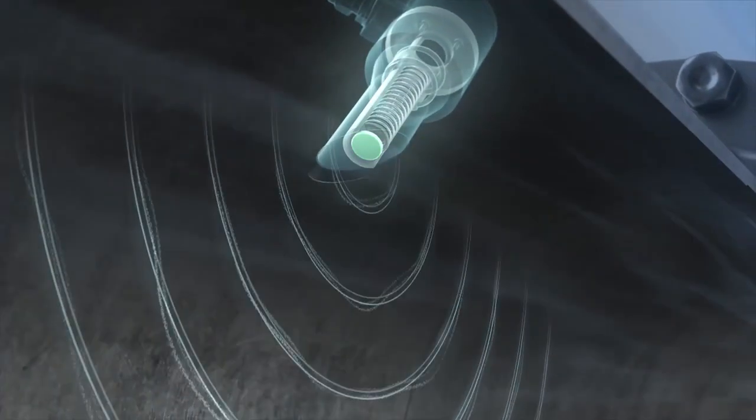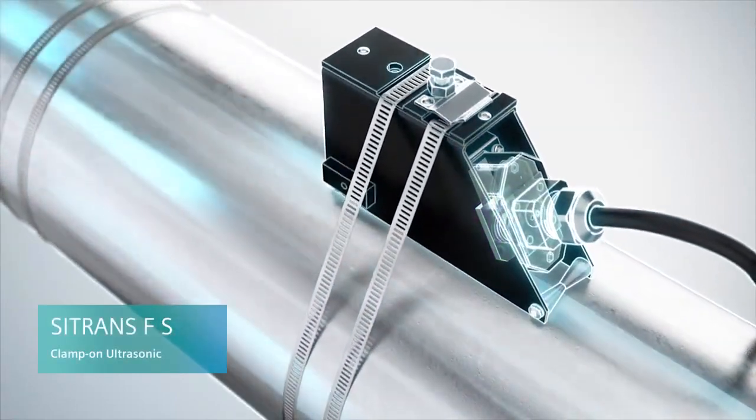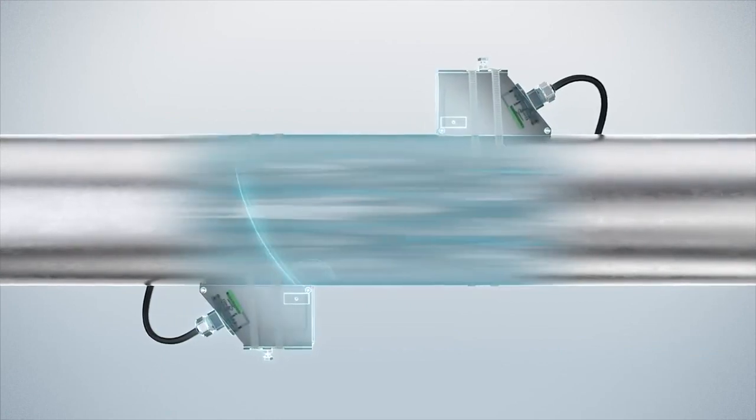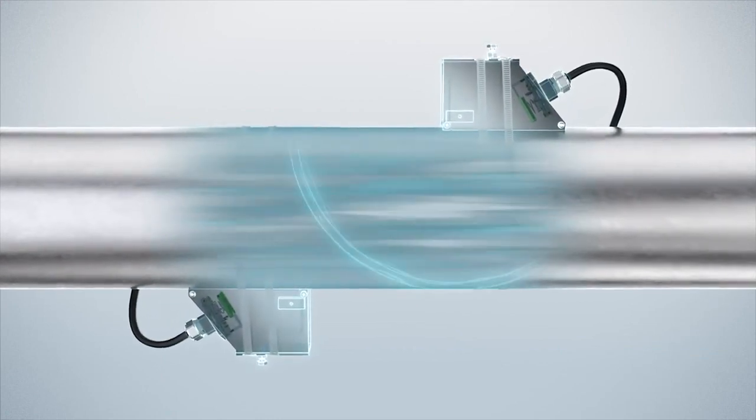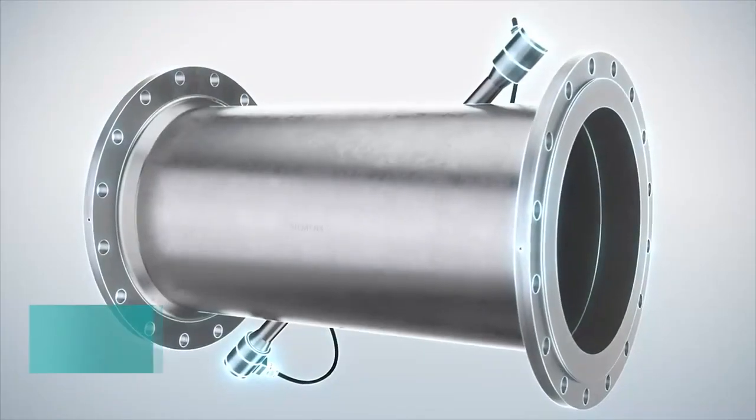The clamp-on version, however, uses sensors that are mounted on the outside of the pipe. Ongoing processes are not interrupted and the sensors never touch the medium. Siemens offers a wide range of solutions from single path transit time to highly complex multi-path measurements.